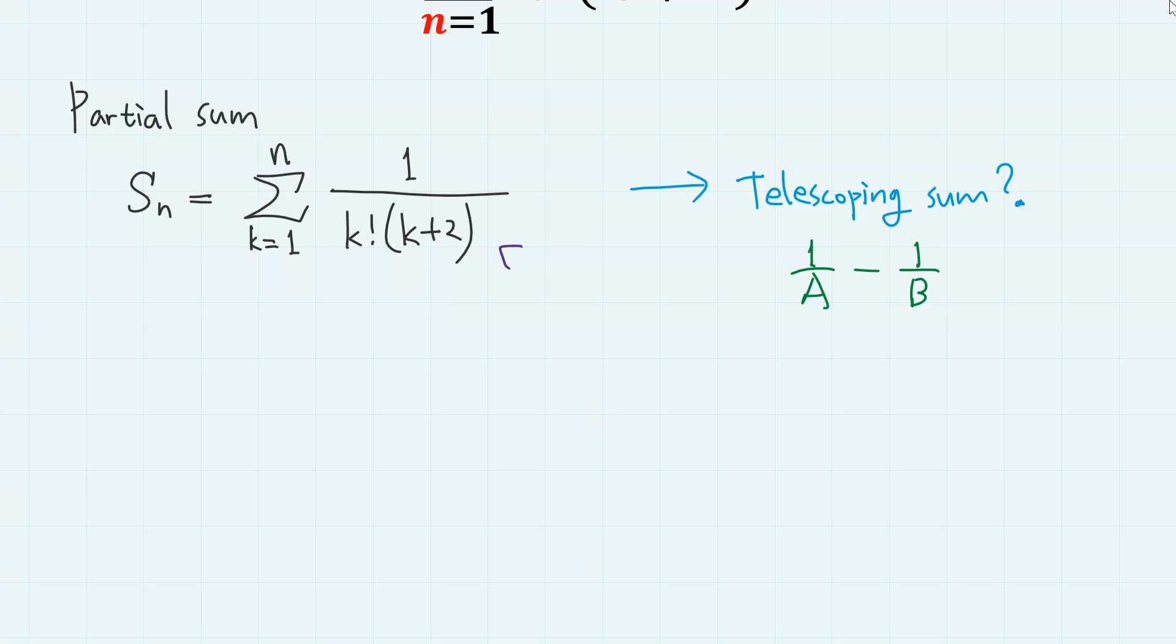Now, let us examine the denominator. It is k factorial times k plus 2. So it is some kind of incomplete factorial. Why? Well, if we only had additional k plus 1, this entire thing could become k plus 2 factorial.